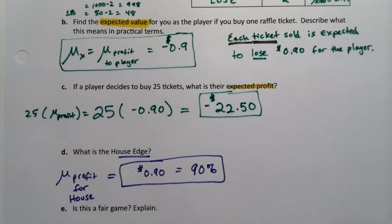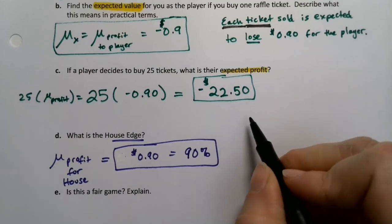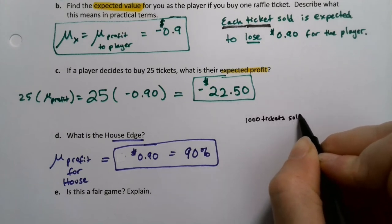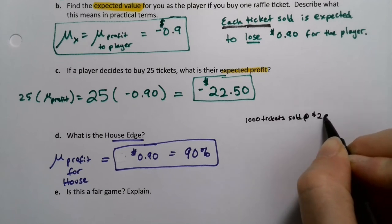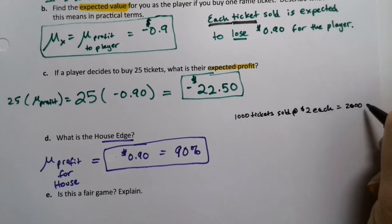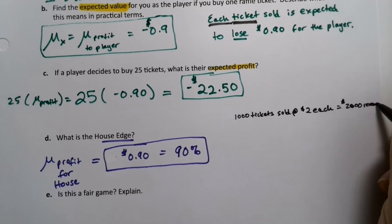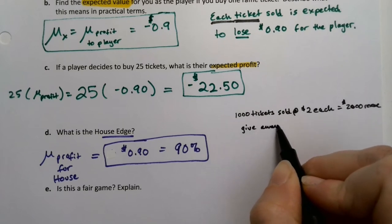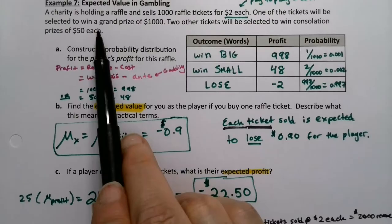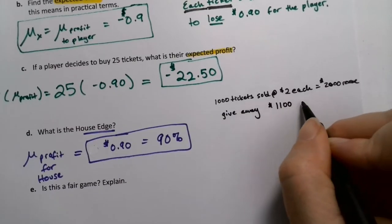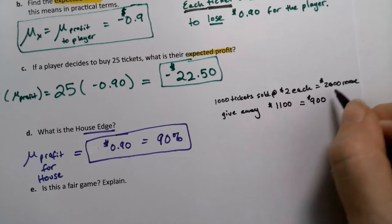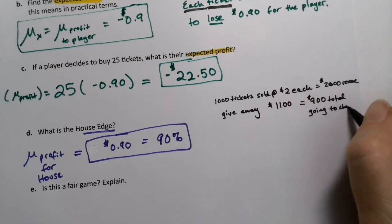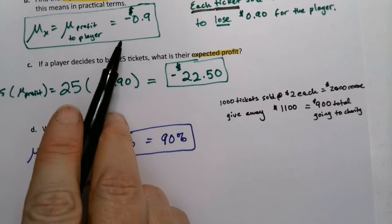Now, let me put these two things in perspective for you just to kind of help. There are a thousand tickets sold altogether. If there are a thousand tickets sold at $2 each, that would mean $2,000 in revenue for the charity. Then they gave away a thousand and 50 and 50, so they give away $1,100, which means there's $900 total going to the charity.